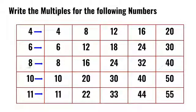In the third row, you have to write the multiples of 8. 8 ones are 8, 8 twos are 16, and so on. So 8, 16, 24, 32, and 40 are the first 5 multiples of 8.